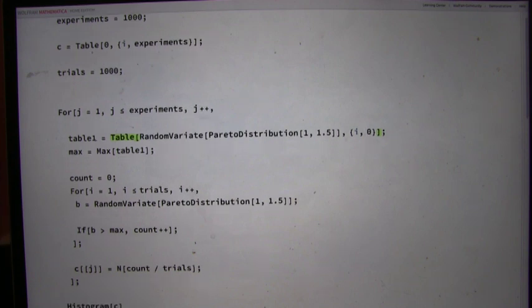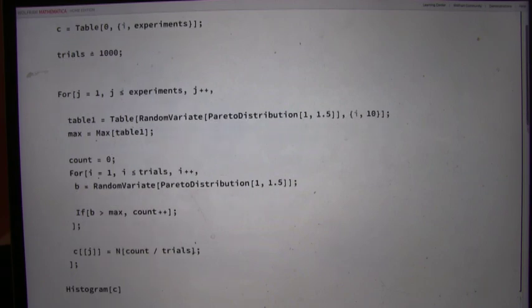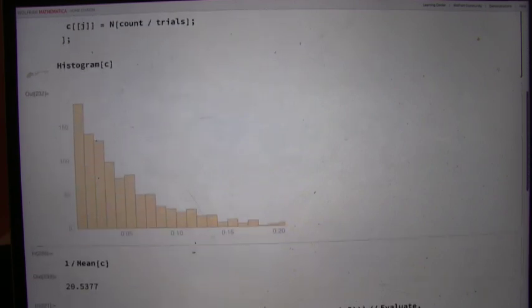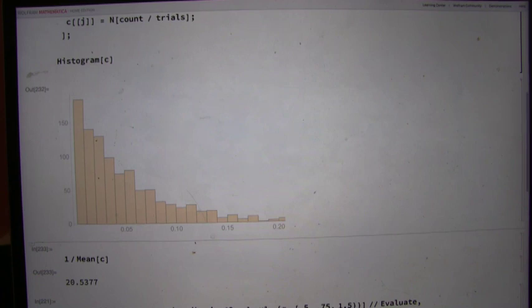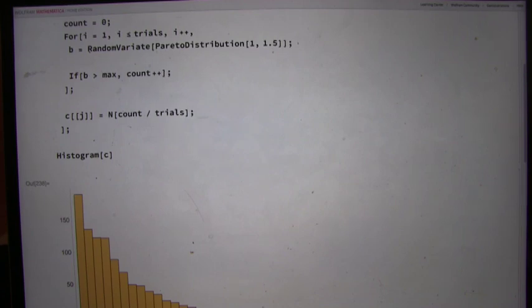And so now when we pick 10 numbers initially, how often are we expecting to have our new number be bigger than the largest one we had before? 10? 10 times? Or 1 over 10. Yeah, 10% of the time, or one-tenth of the time.